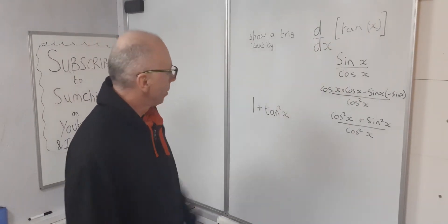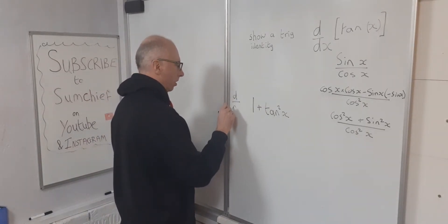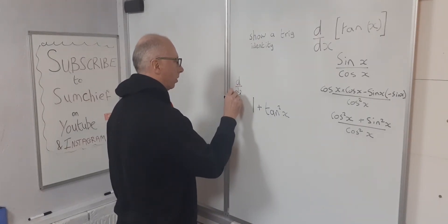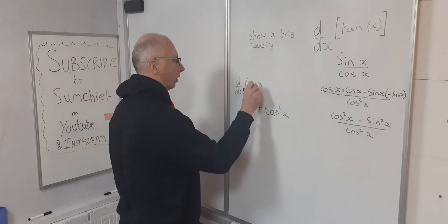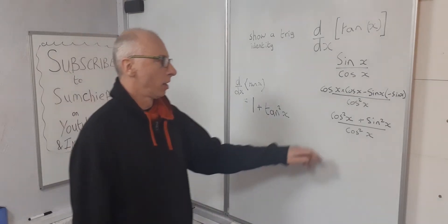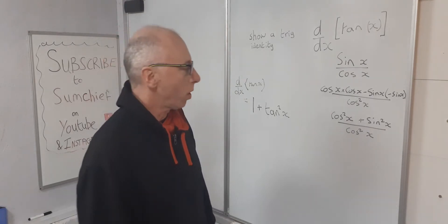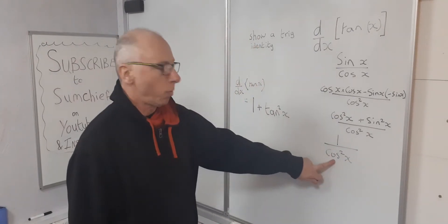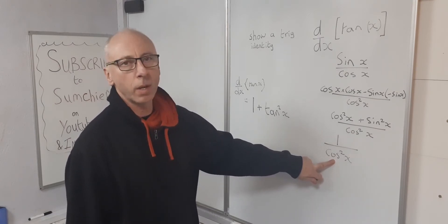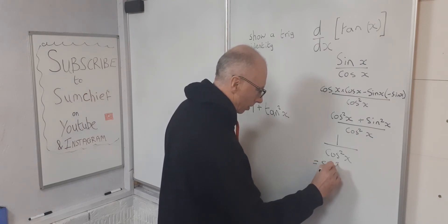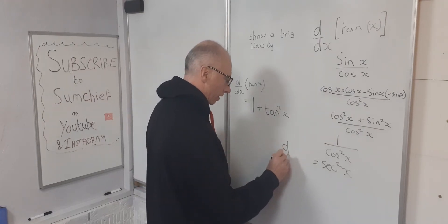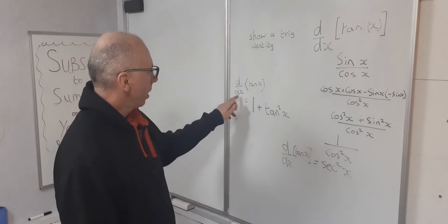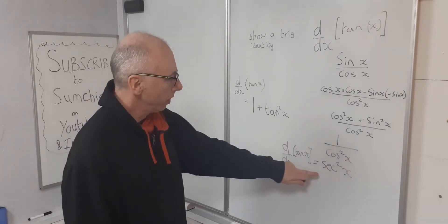So that is the derivative of tangent x — one plus tan squared x. Another way we can do it: cosine squared of x plus sine squared of x equals one, so we're left with one over cosine squared of x. And one over cosine of x is secant x, so this is just secant squared of x. So we could also say that d/dx of tan x is secant squared of x.